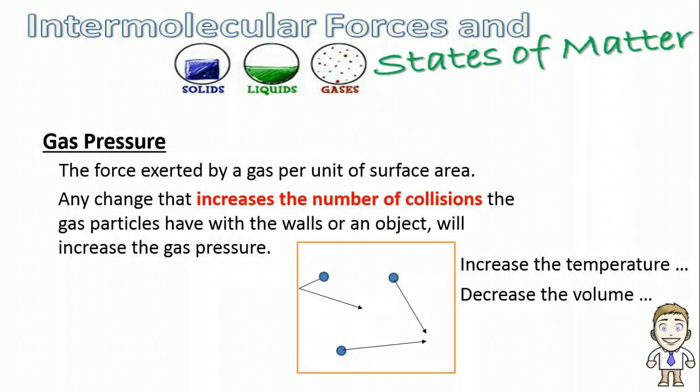Secondly, we're going to decrease the volume, also bringing the speed of those particles back to normal speed. If the particles have less room to move around in, they're going to collide with the walls more. More collisions, more pressure. So decreasing the volume of a container will also raise the pressure.